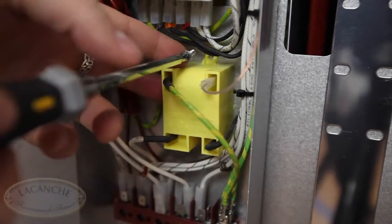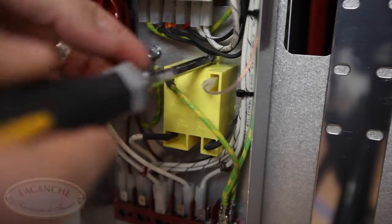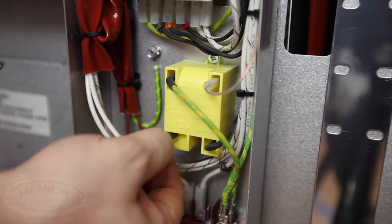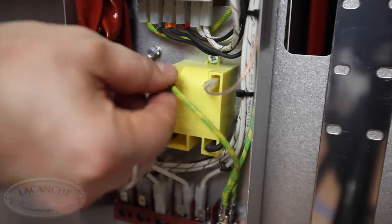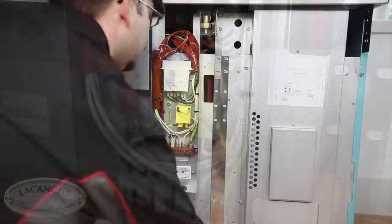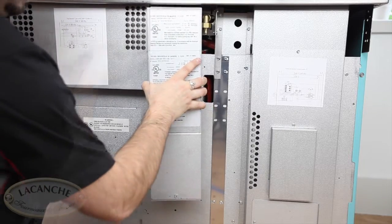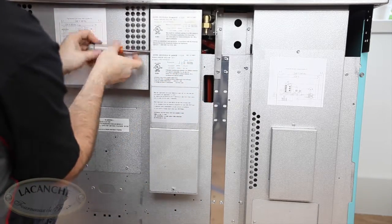Remount the new module and tighten the two Phillips screws. Replace the electrical panel cover and move the range back into position.